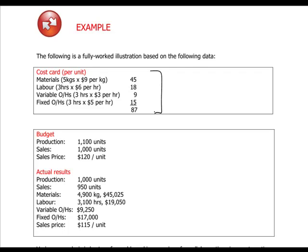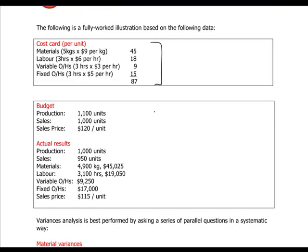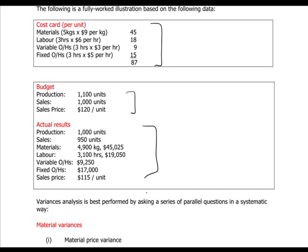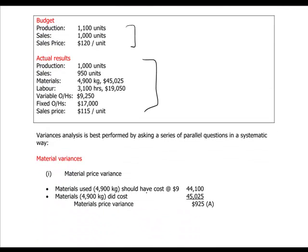The cost card is something we have in the budget. We have a budgeted production and sales and actual results that you would compare with the cost card and the budget. Then you do a series of calculations in a systematic way — for example, for material variances, which work the same as for sales, just interpreting the results in a different way.